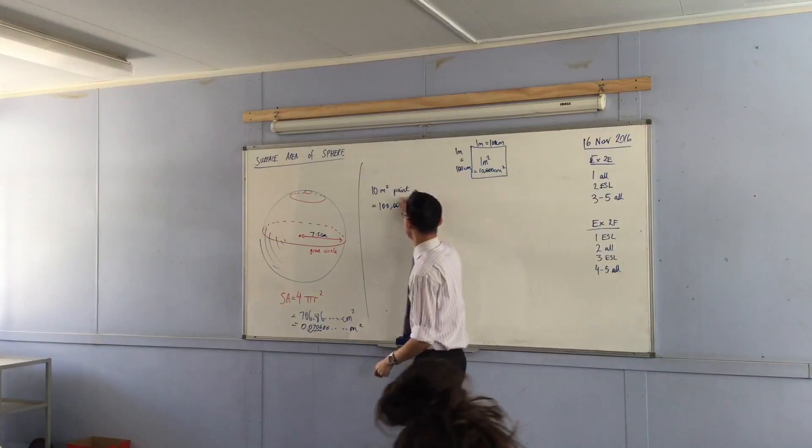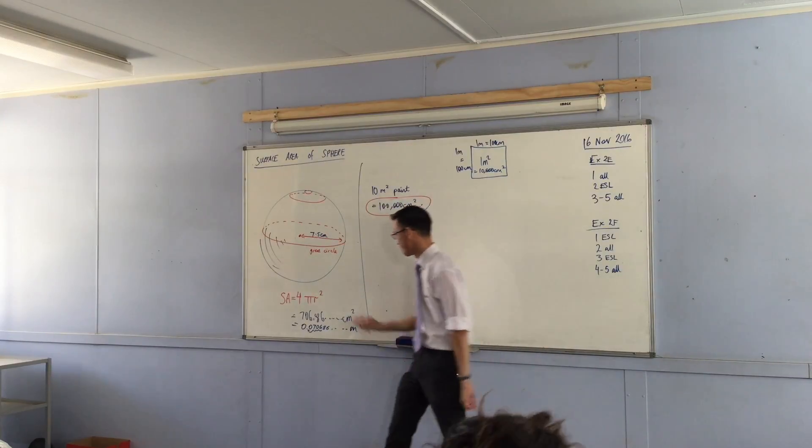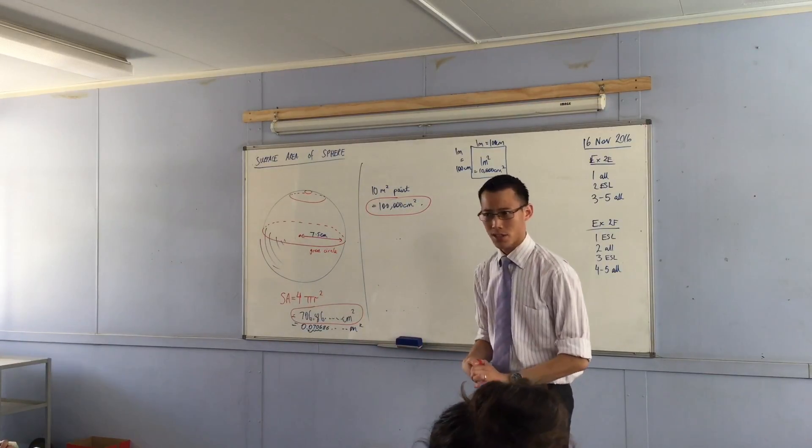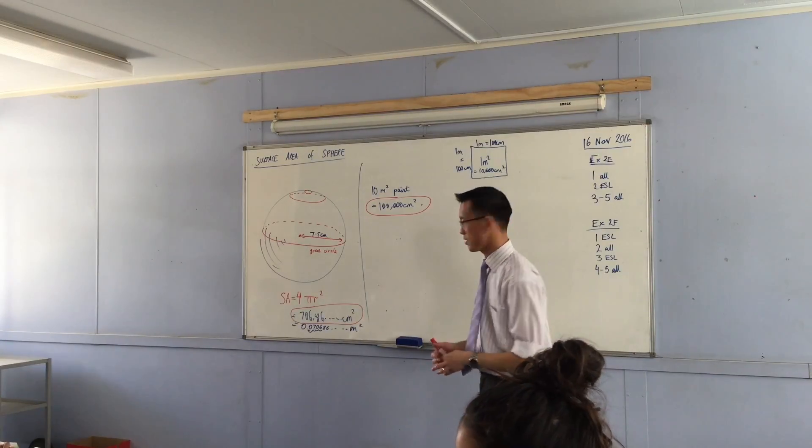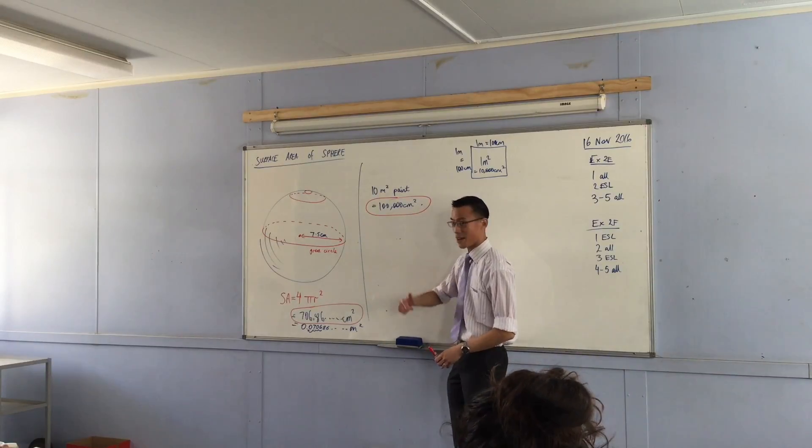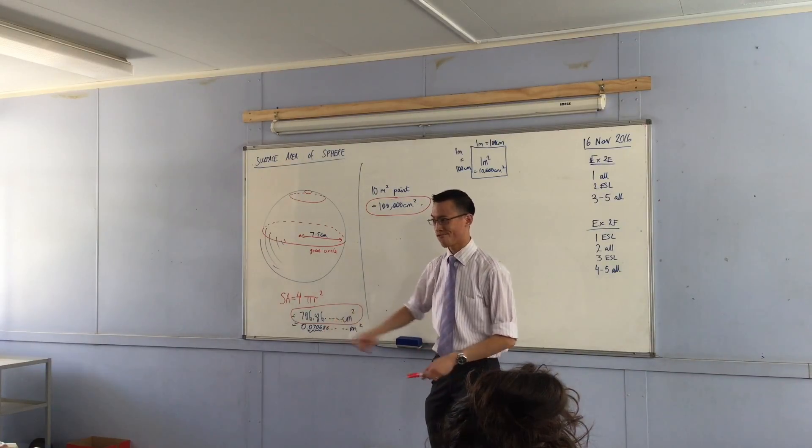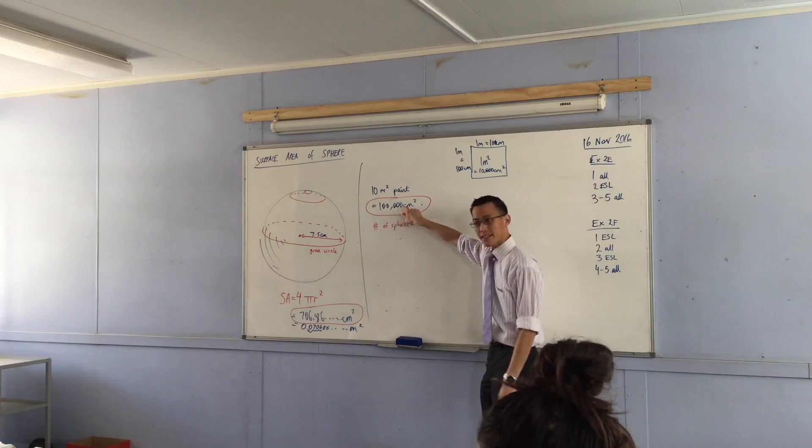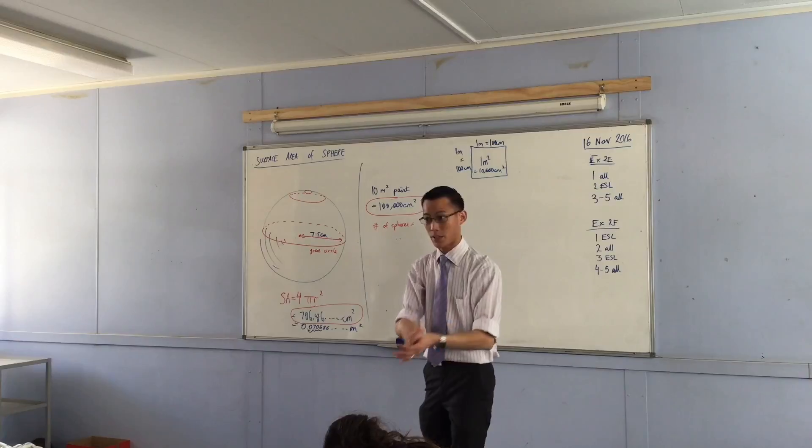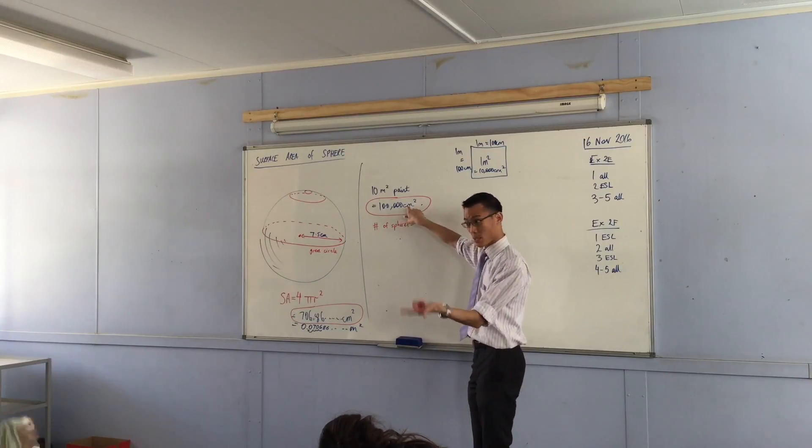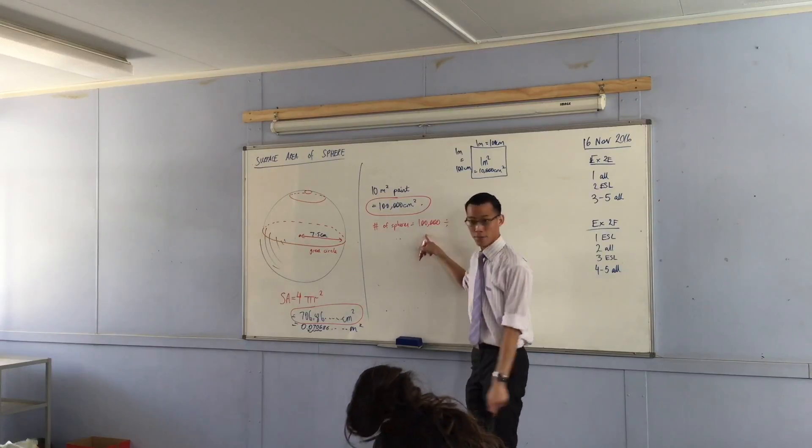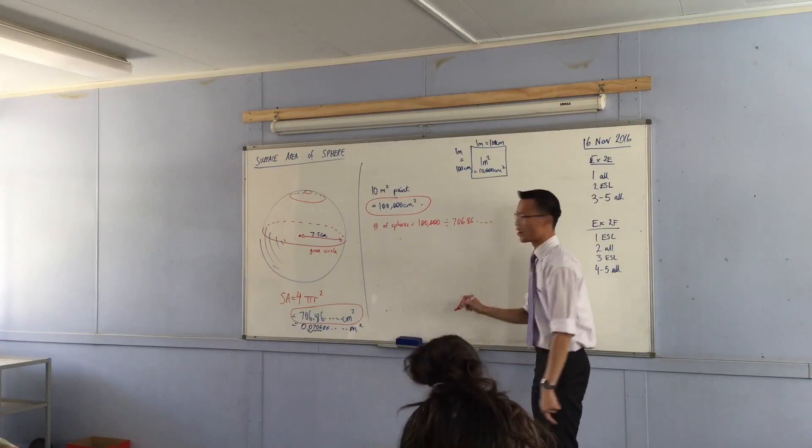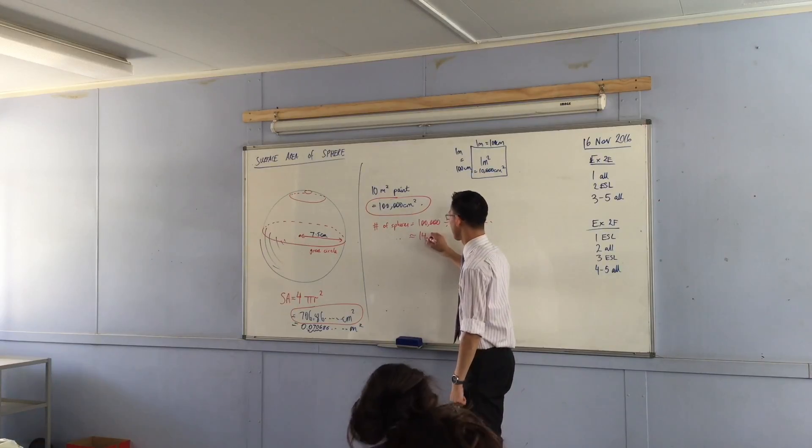So now here comes the question of how to combine these. Here's how much paint I've got. Here's how much each individual sphere is. I think most of us know that there's some division involved. But the question is, do I divide this by this, or do I divide this by this? The number of spheres is going to be this number here, this is the amount of paint. I'm going to split it out across all these different spheres. This is the number that gets split. So to split a number, you put it at the front, and then you're going to divide it by how much each one of them is.